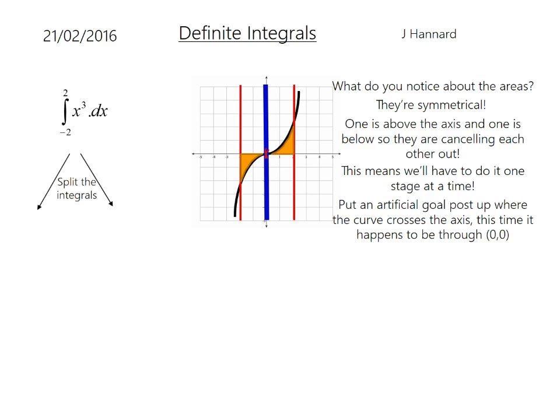So split the integrals like that. So you have 1 between 2 and 0 and 1 between 0 and minus 2. Same as before, integrate first. Add 1 to the power divided by the new power. Put your 2 and 0 through and subtract, and you get 4.